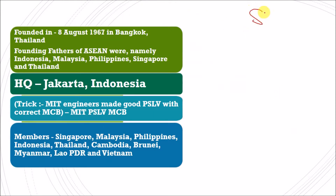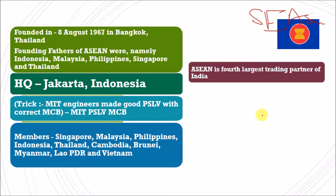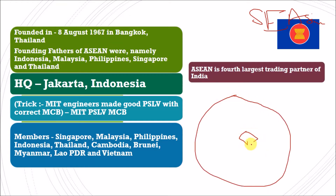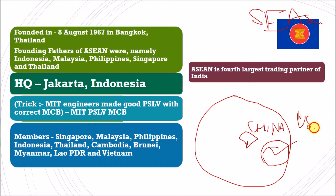ASEAN countries are the South East Asian nations of the world. As we can see here on the globe, this is India, and these countries here we can call the south east part of the world. These are a group of very small countries. Since they are small, two major powers are nearby — China on one side and America on the other. So these small countries have their own alliance to protect themselves from foreign invasion, to protect their trade, technical relationships, and economic interests. This alliance is called ASEAN.